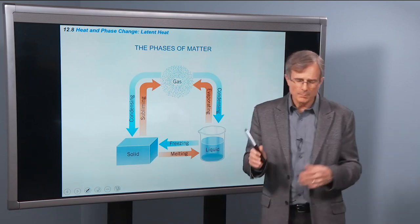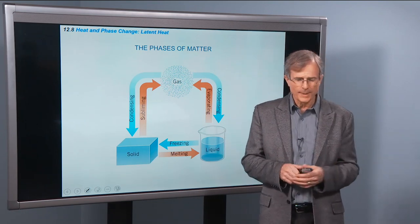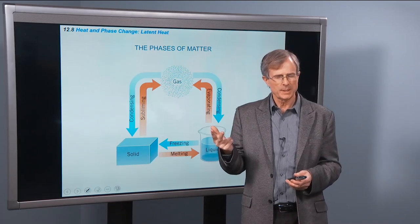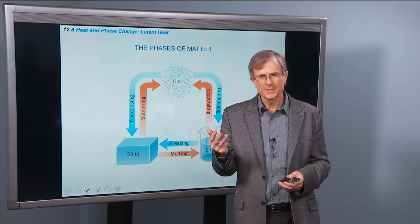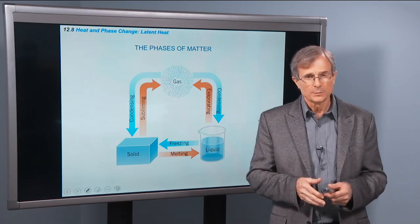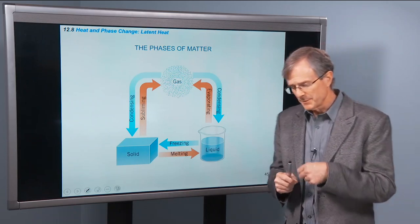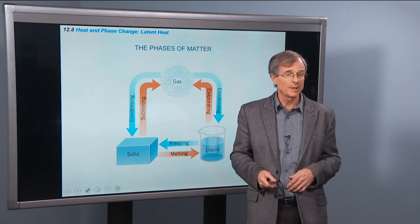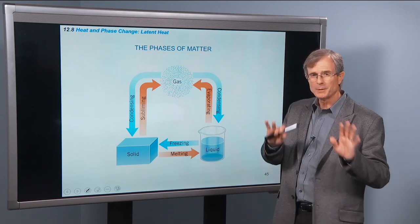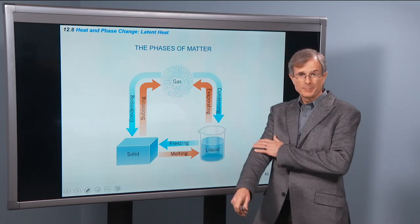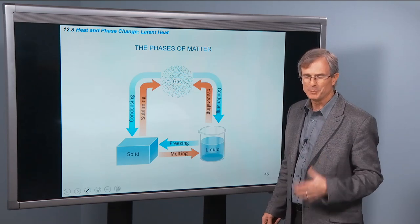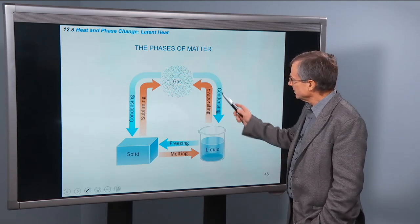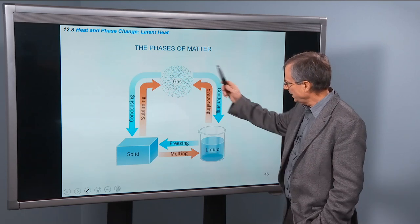Latent heat. Matter exists as a solid, a liquid, and as a gas. There's also a fourth state of matter called plasma, which is a hot gas where some of the electrons are stripped off of the atoms and it becomes conducting. We're not going to worry too much about plasmas right now — we're talking about plasma physics, not blood plasma. Solid, liquid, and gas.